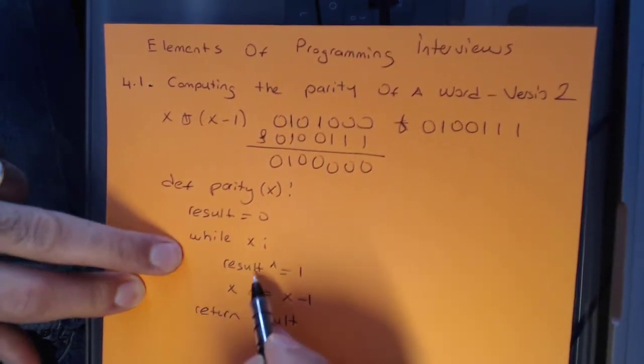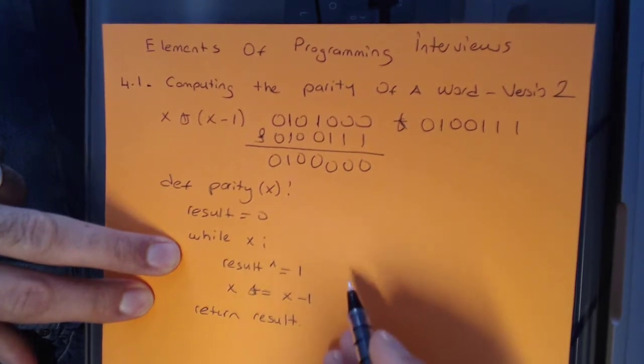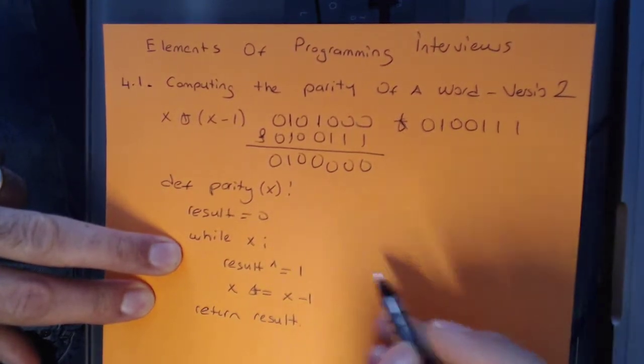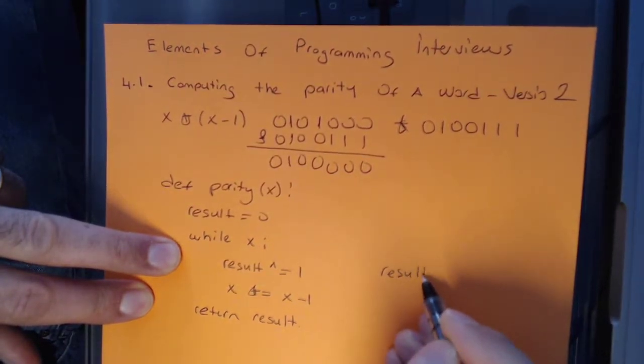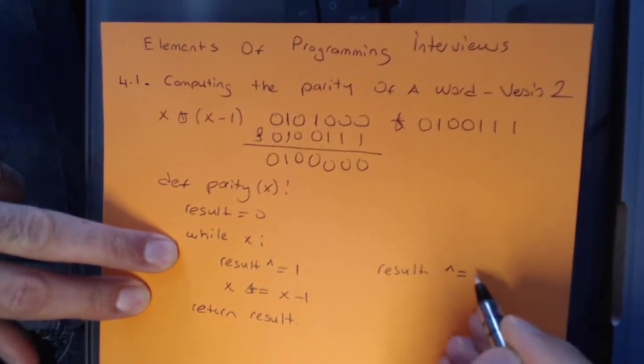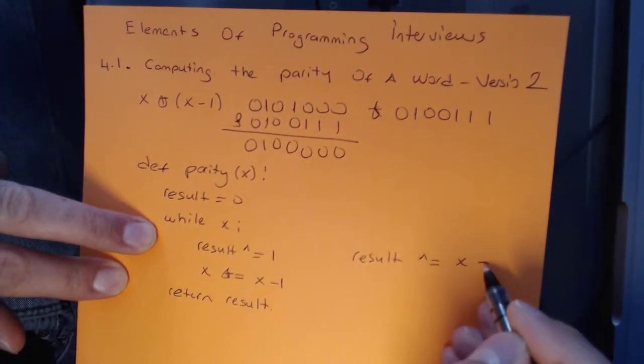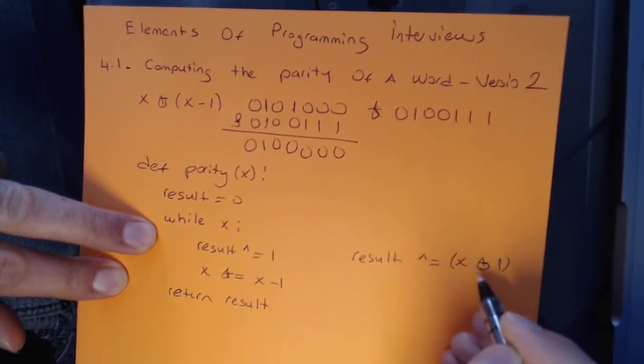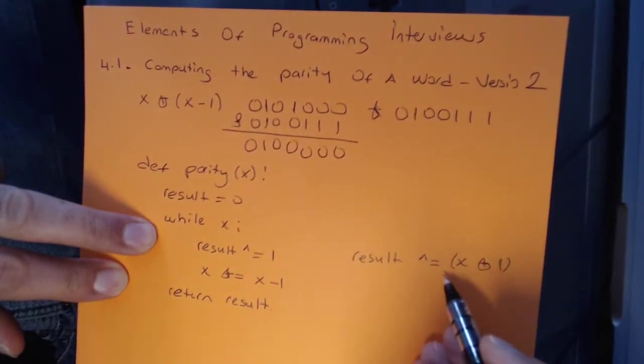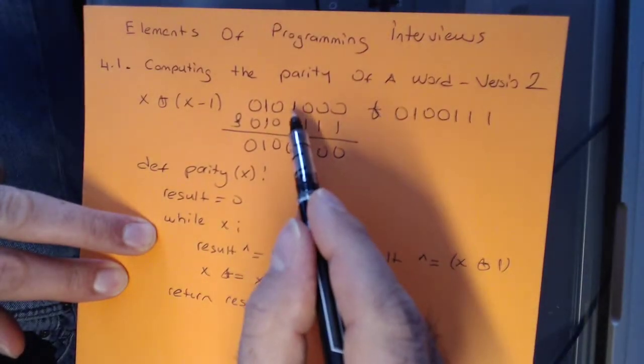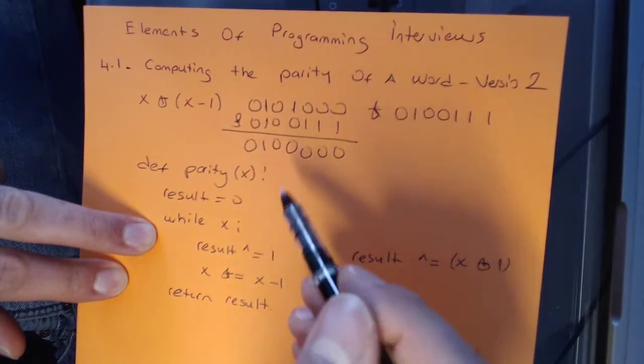XORing the result with what we did in the previous example. If you were going through every single bit, we would have had to take the result and XOR it with X & 1 because we would be looking at the last bit. But we are not doing it in this case. What we are really doing is we are actually unsetting a set bit we know that was 1.